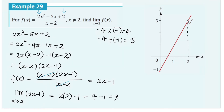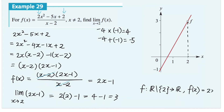So we can say that the graph of f can take any real number except 2, and this simplified function is 2x minus 1.